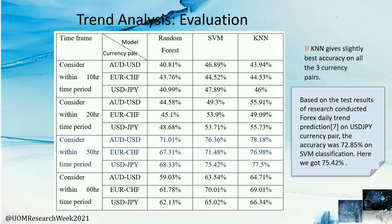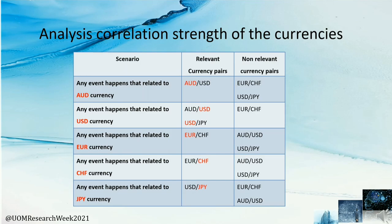The K-Nearest Neighbor algorithm gives the best accuracy across the three currency pairs. Based on test results from research conducted on forex daily trend prediction for the US Dollar and Japanese Yen currency pair, the accuracy was 72 percent and 85 percent on SVM classification. We achieved 75 percent and 42 percent in SVM classification, attaining a higher percentage in our trend analysis.